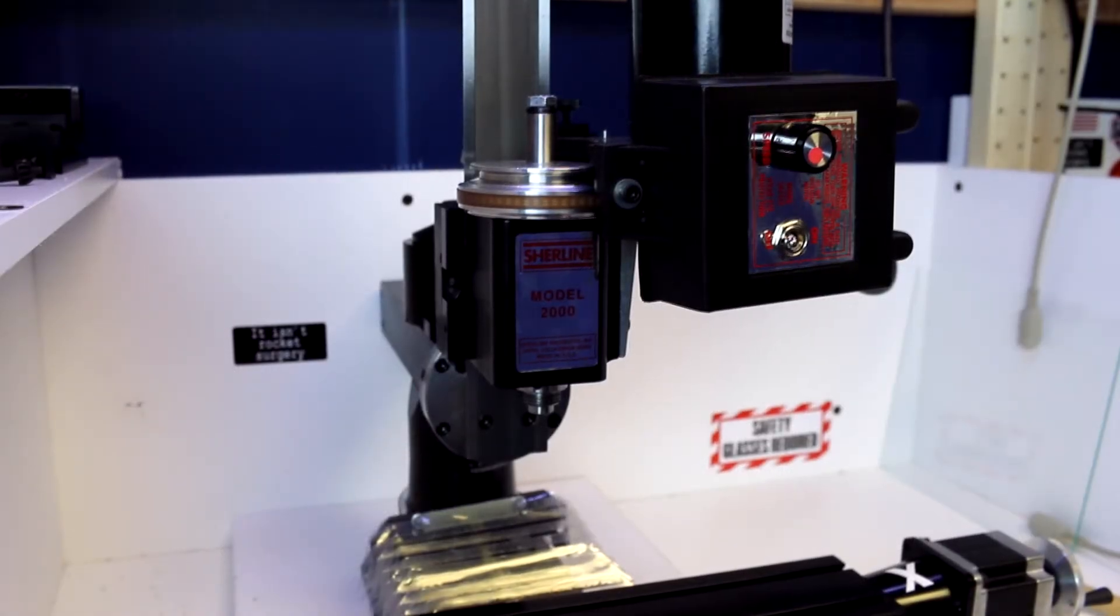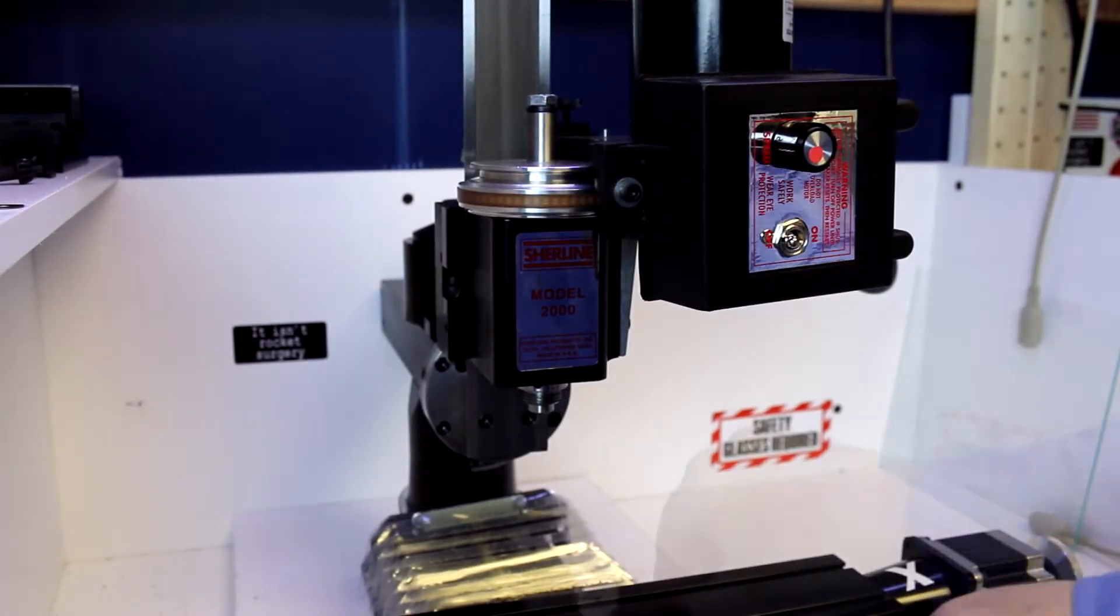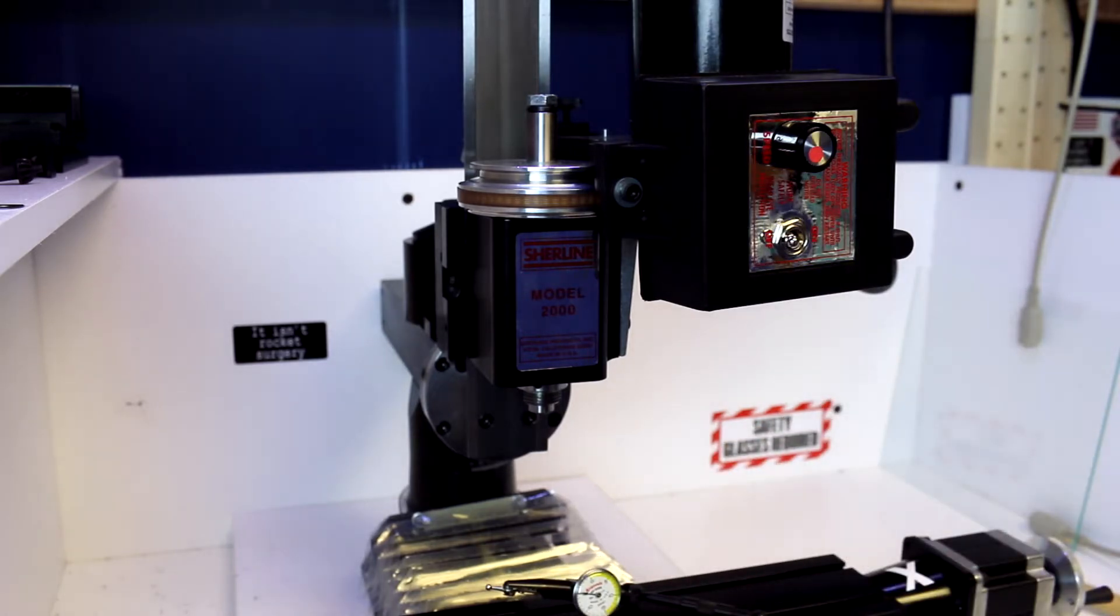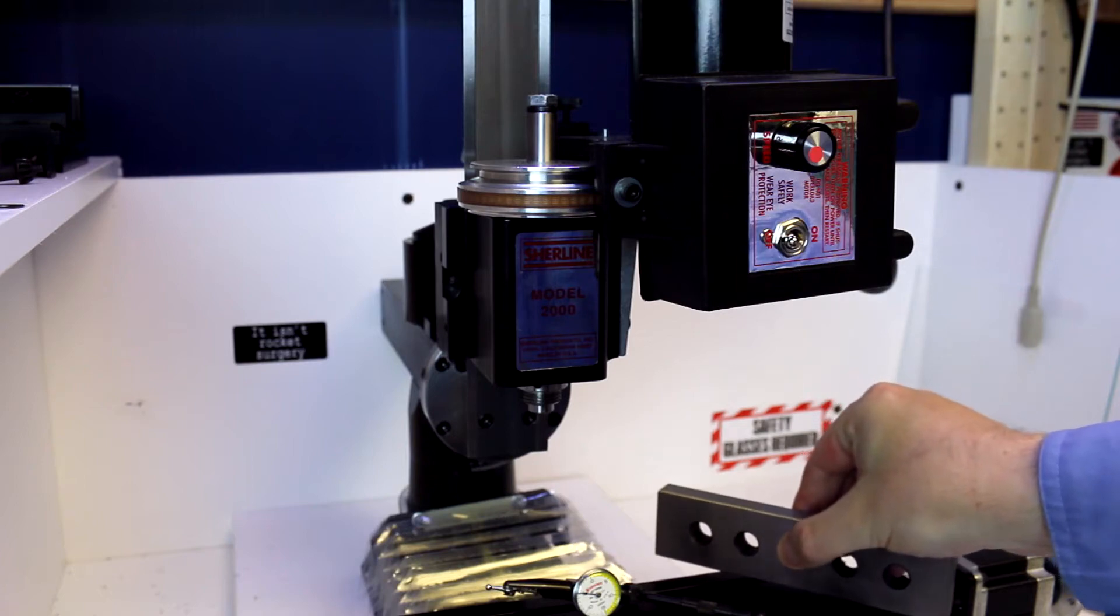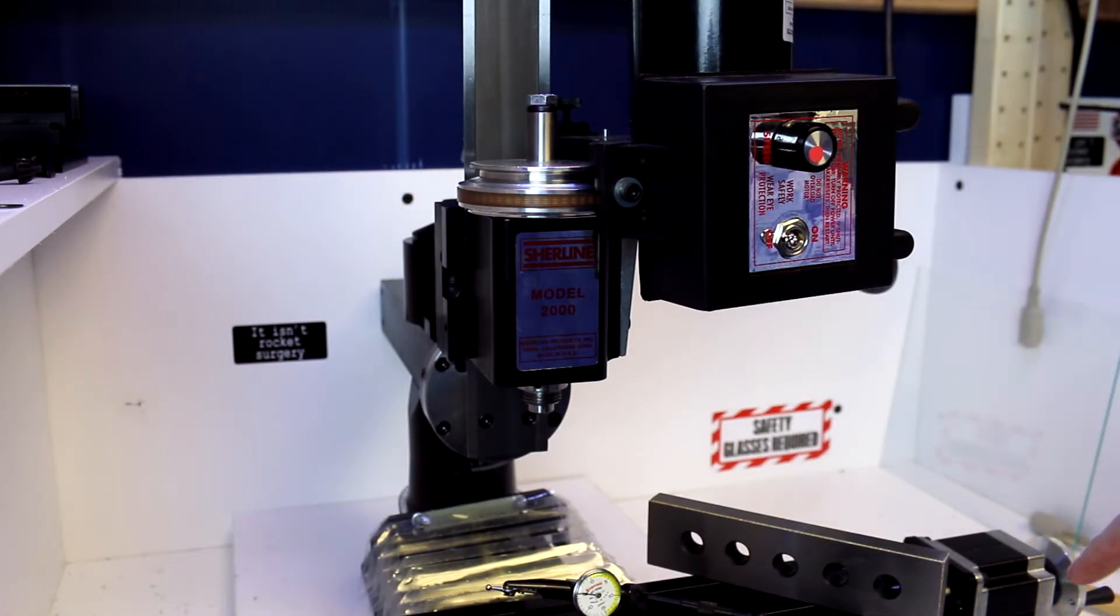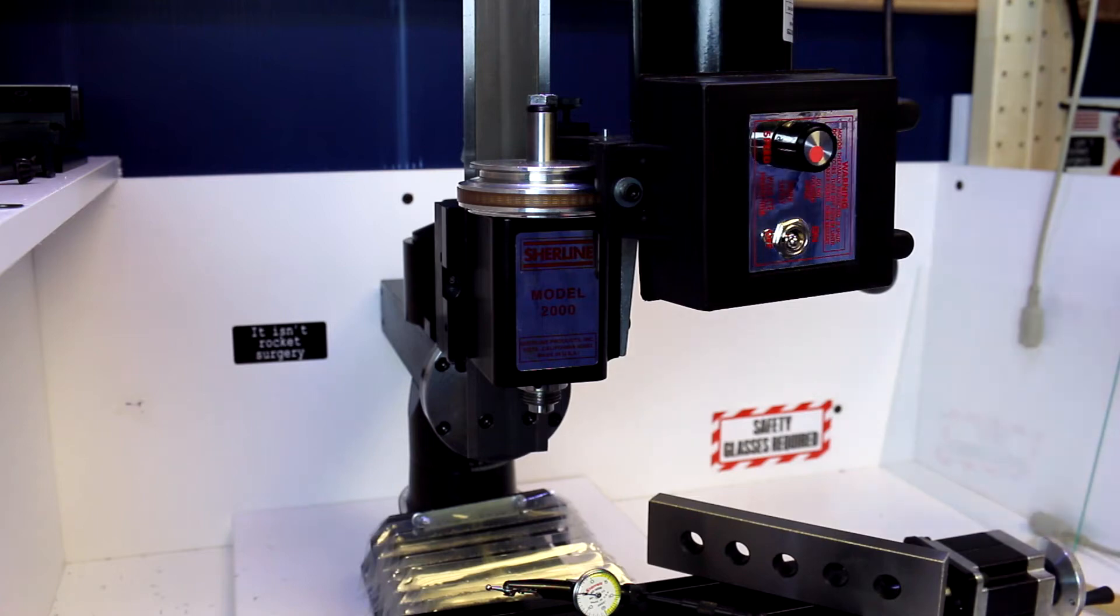In part two, we're going to look at how to use a dial indicator to get more precise measurement and precise alignment and tramming of our head. A couple other things you may want to have that will make this easier is a large parallel that's precision ground, or I've had over here in the background a plate of glass, this is an 8 by 10 plate of glass. We'll get into how those will be useful as we get started here.